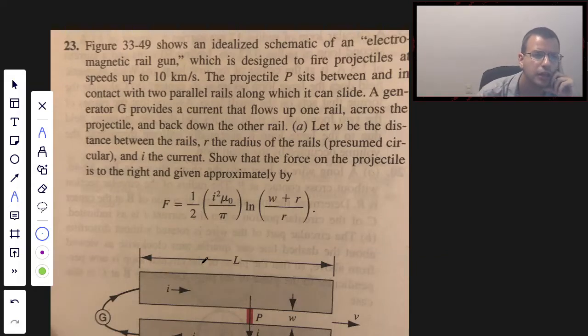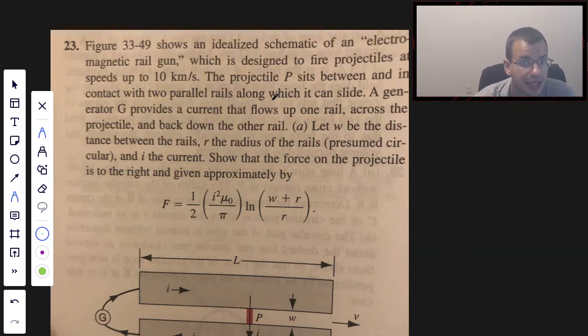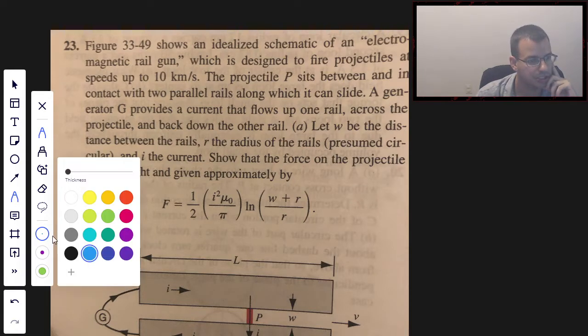Figure 33-49 shows an idealized schematic of an electromagnetic rail gun, which is designed to fire projectiles at speeds of up to 10 km per second. The projectile piece sits between and in contact with two parallel rails along which it can slide. The generator G provides a current that flows up one rail across the projectile back down the other rail. Let W be the width between the two rails and R the radius of each rail, presumed to be circular with current I. Show that the force on the projectile to the right is given approximately by this. Okay, so there is some nuance here.